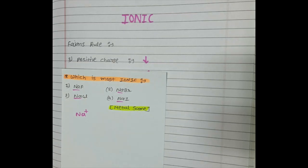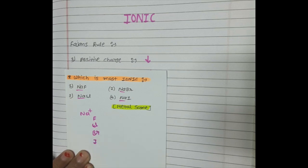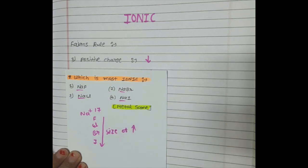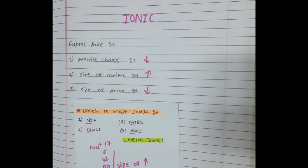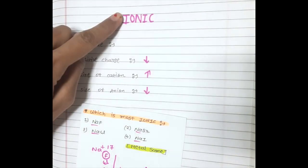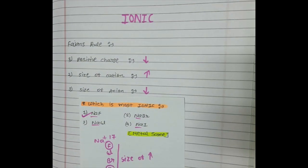Next: which is the most ionic compound — NaF, NaCl, NaBr, or NaI? In this case, Na is the same; the cation is the same. So it only depends on the anion: F, Cl, Br, I — these are Group 17 elements. Moving from top to bottom, the size of the element increases. But Fajans' rule for ionic compounds says that a smaller anion size means more ionic character. The smallest size is fluorine, so NaF is the most ionic compound.